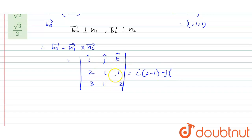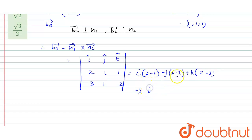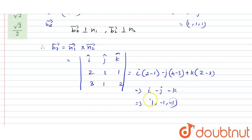Expanding the cross product: i(2×2 - 1×1) - j(2×2 - 1×3) + k(2×1 - 1×3) = i(1) - j(1) + k(-1). So b2 in coordinate form is (1, -1, -1).